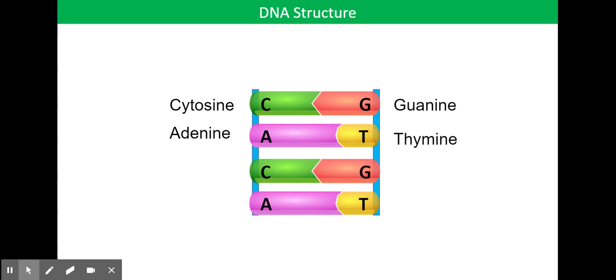Now because cytosine always pairs with guanine and adenine always pairs with thymine, together we call this complementary base pairing. Cytosine is always complementary to guanine. Adenine is always complementary to thymine. It's the sequence of these bases that form your genetic code.